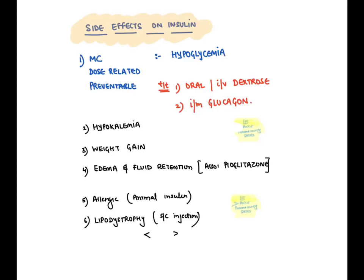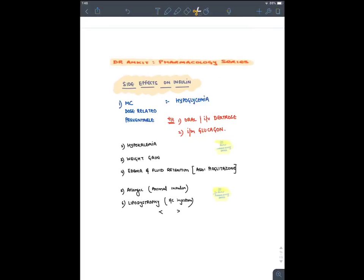Glucagon can stimulate the heart. The side effects of insulin include: hypoglycemia — the most common side effect, treated by IV dextrose, oral dextrose, or intramuscular glucagon — as well as hypokalemia, weight gain (because insulin is an anabolic hormone), edema and fluid retention, allergic reaction, and lipodystrophy.